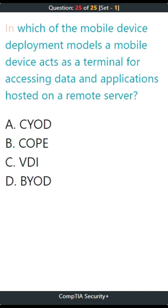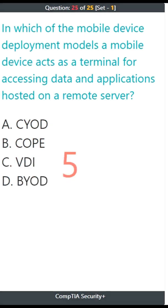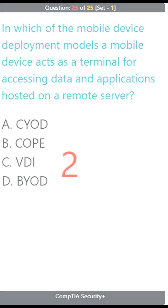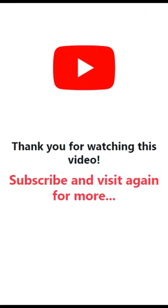Question 25. In which of the mobile device deployment models does a mobile device act as a terminal for accessing data and applications hosted on a remote server? A. CYOD, B. COBO, C. COPE, D. COBO. The correct answer is CYOD.